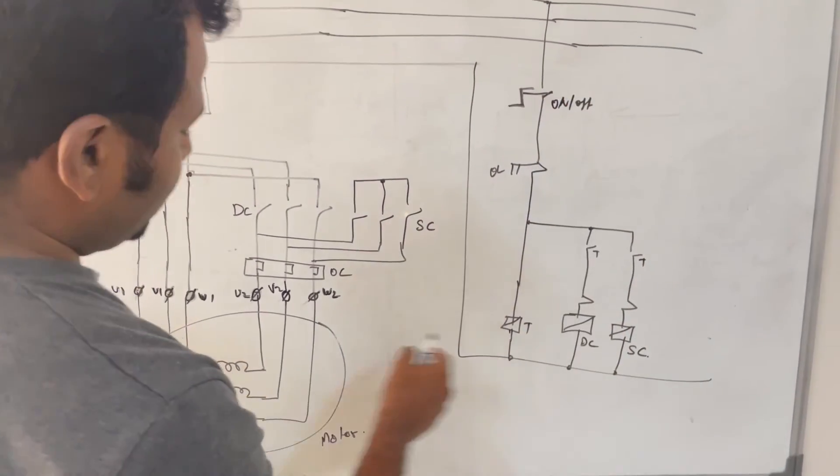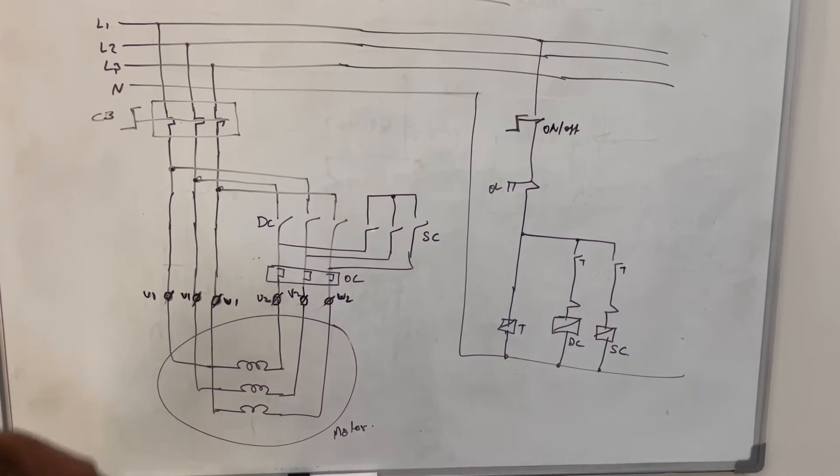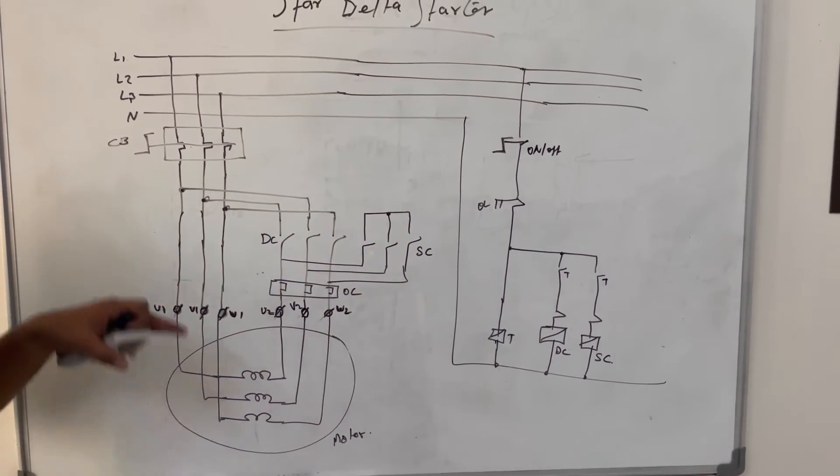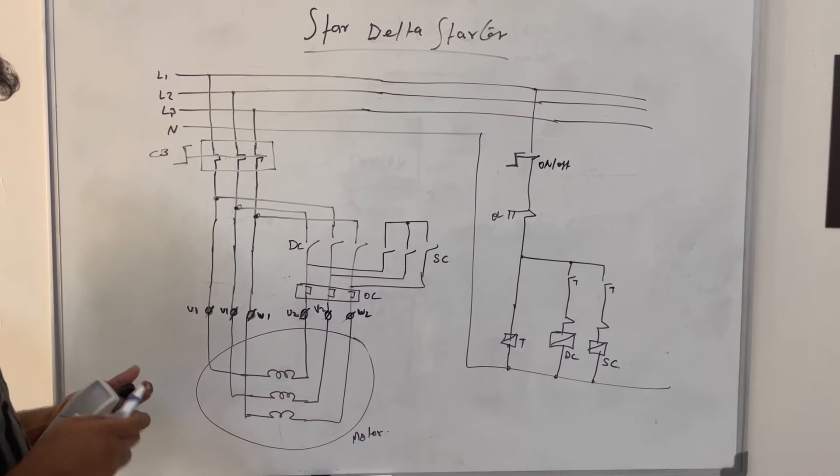So the motor will be converted to delta connection, and the motor will be running in normal condition. So this is one of the options for star delta starter with two contactors.